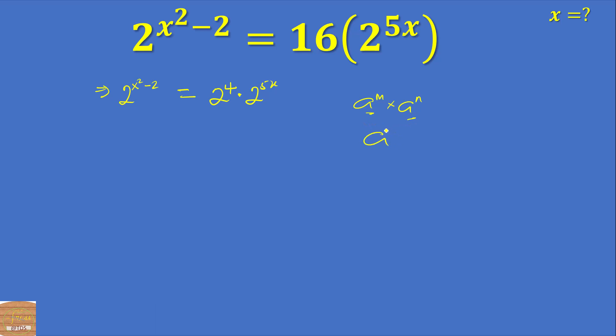So this side will be 2 to the power x squared minus 2, and we have 2 to the power 4 plus 5x.